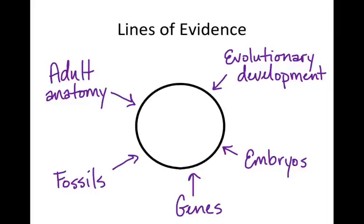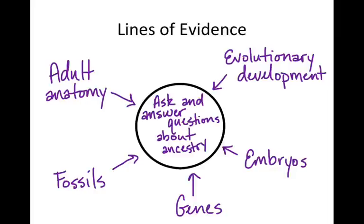We have in the past also used gene sequences, and now we're relying a lot on protein sequences as well, to get a sense of a clock — more of a measure of difference between species. And all of these lines of evidence help us to ask and answer questions about ancestry.